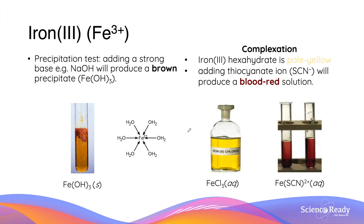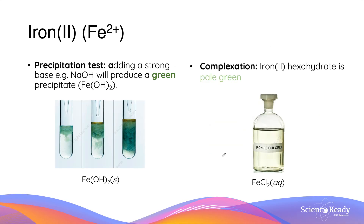Iron(III) ions are also a type of transition metal. When we add hydroxide ions, it produces a brown precipitate as shown here. In solution, iron(III) ions form complexes with water molecules that give a yellow appearance. Upon reacting with thiocyanate ions, it produces iron thiocyanate which has a blood red appearance. Iron(II) ions can also be identified by adding hydroxide to produce a green precipitate, and in solution iron(II) ions give a pale green appearance.